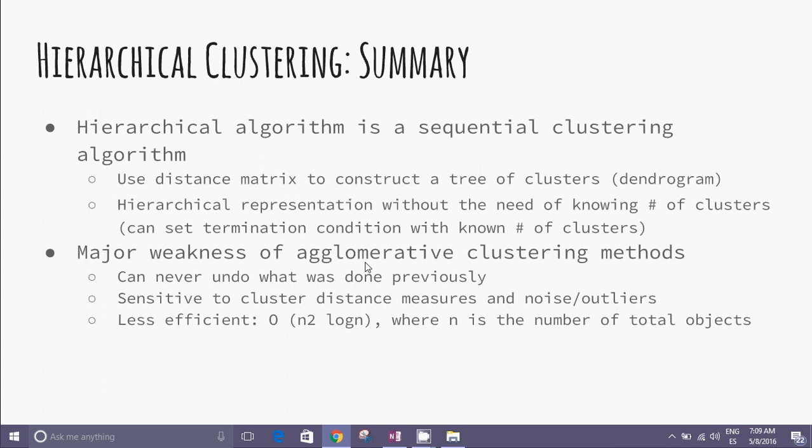However, we can set termination conditions with known number of clusters, but it isn't necessary. Major weakness of agglomerative clustering methods: can never undo what was done previously. Sensitive to cluster distance measures and noise outliers. Less efficient: O(n² log n), where n is the number of total objects. Goodbye.